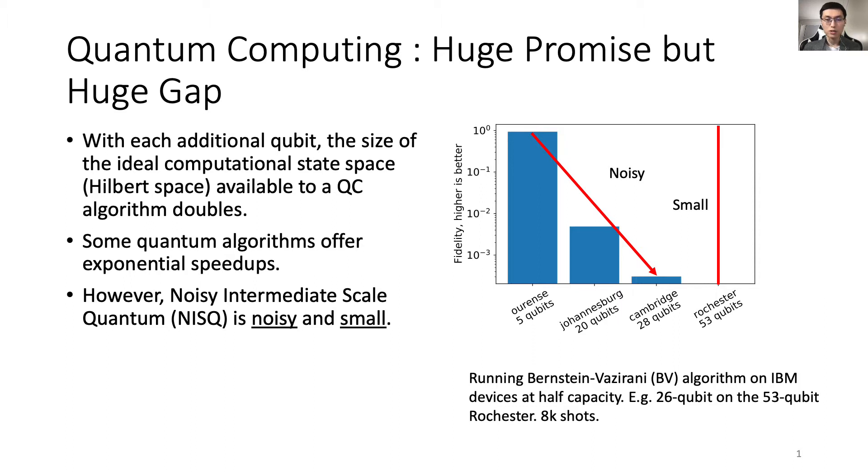However, we're currently in the noisy intermediate-scale quantum era, or NISQ, which are noisy and small. The figure here shows running the Bernstein-Vazirani, or BV, algorithm on IBM quantum devices at half capacity. For example, we're running 26 qubit on their largest 53 qubit Rochester device with 8000 shots. The probability of getting the correct result, which is called fidelity, decreases to below 1% even on the 20 qubit Johannesburg device. The fidelity is effectively zero on the larger ones.